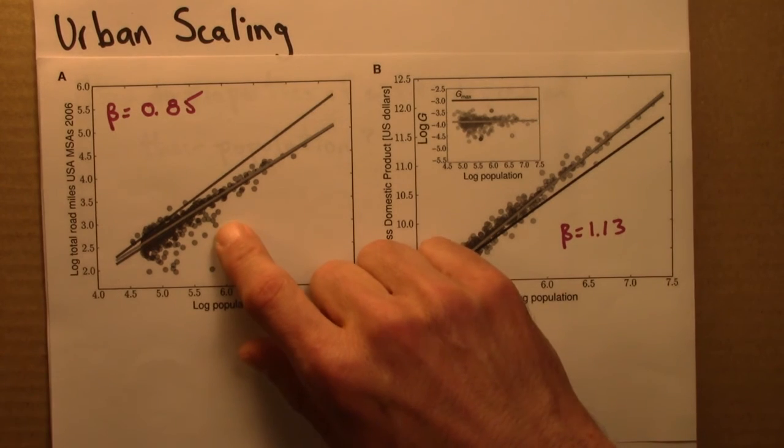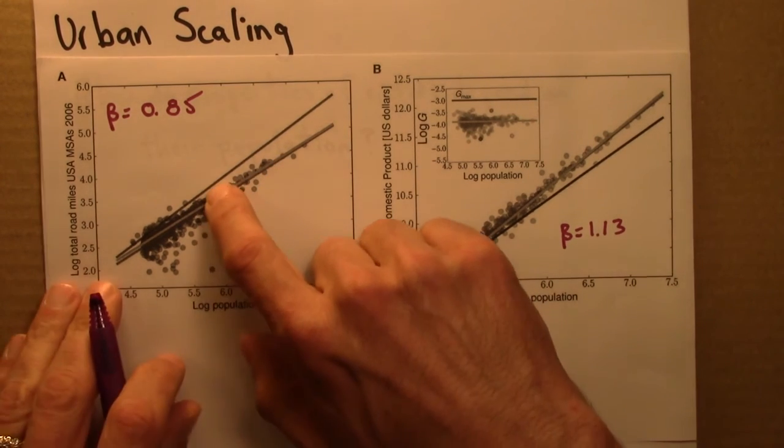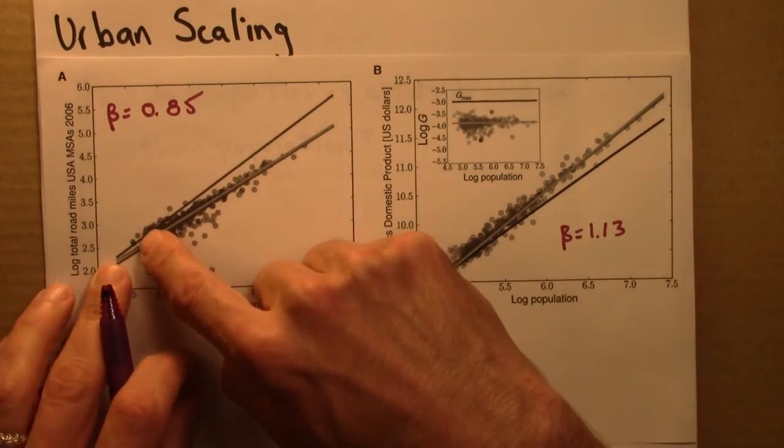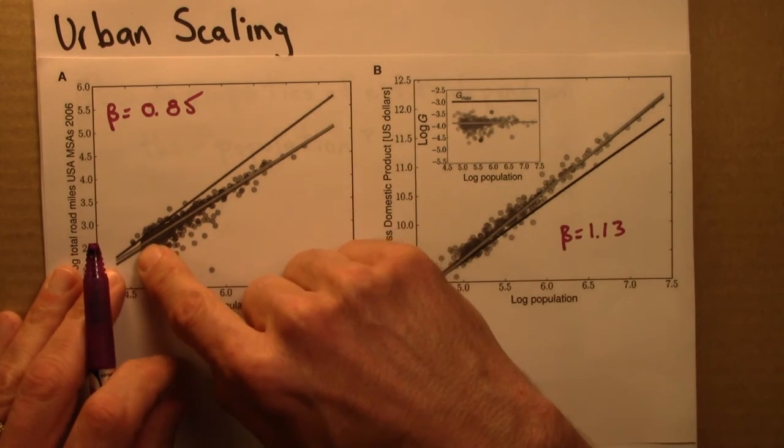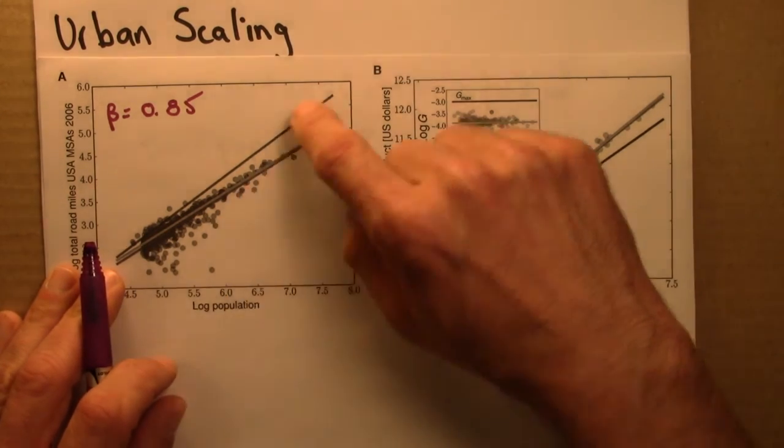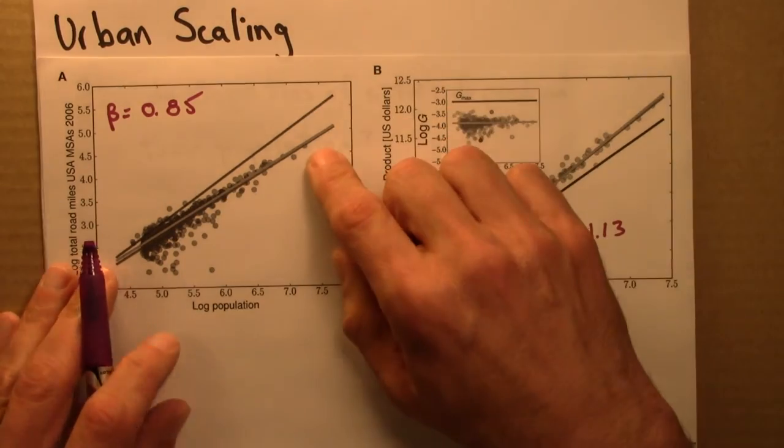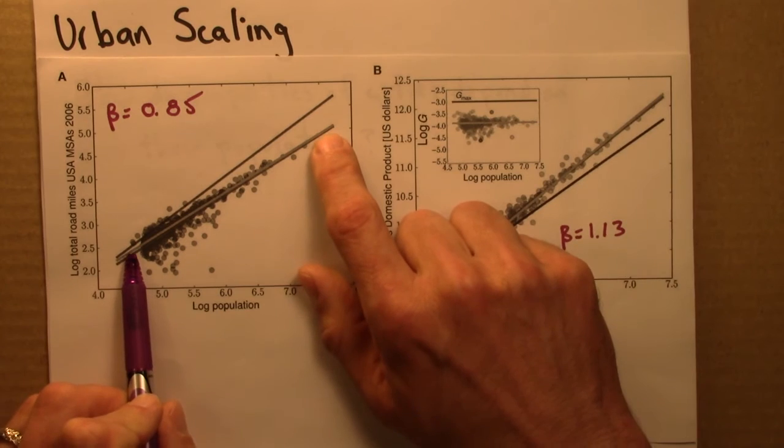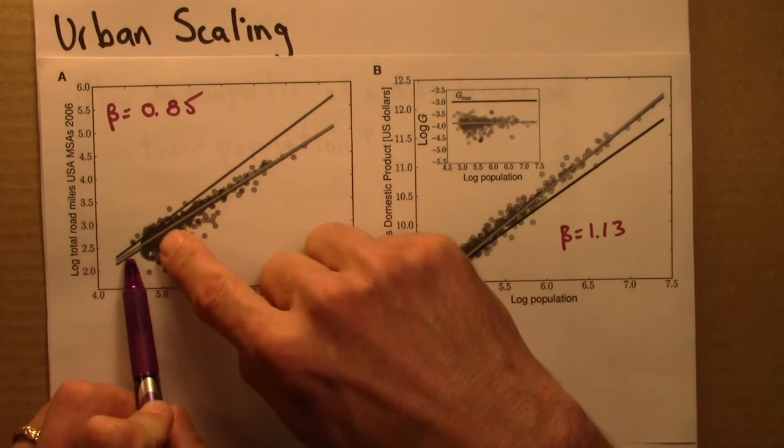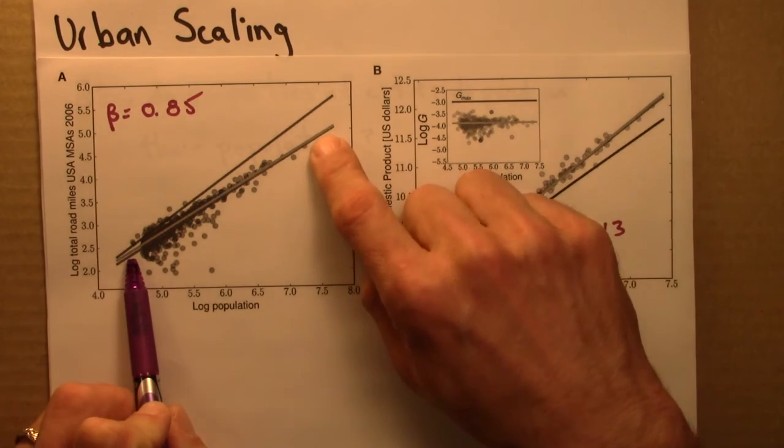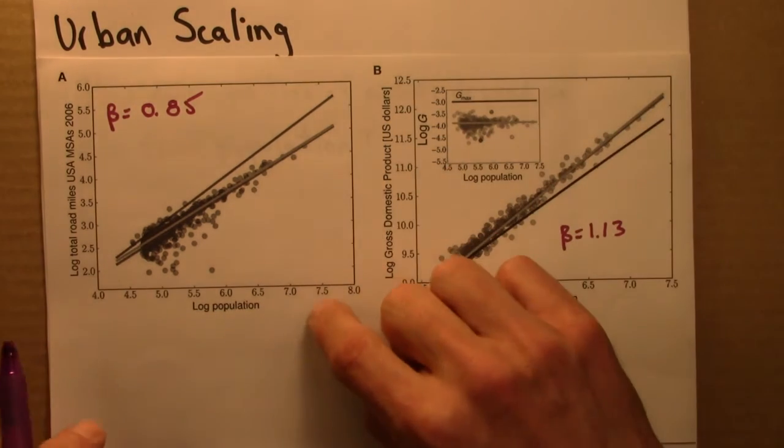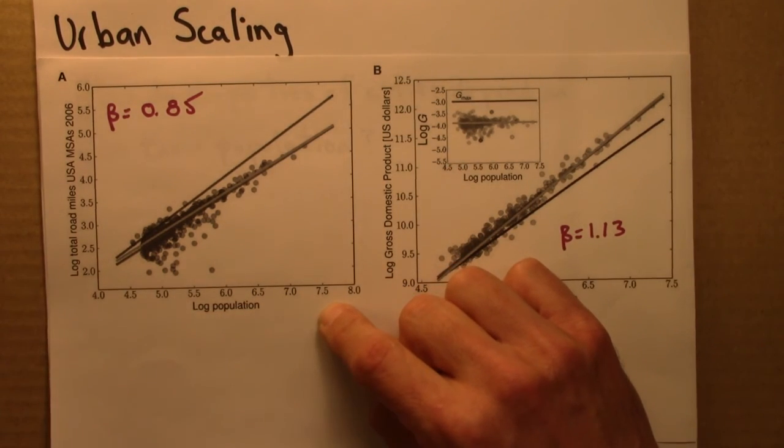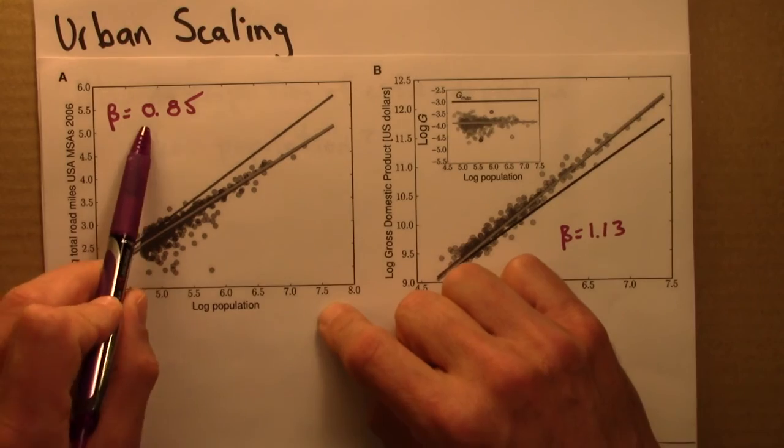So, let me also explain what these lines are. This line here, the sort of darkest line, is a line with a slope of 1. And what this is showing is that the data themselves are clearly, their trend is clearly less than 1. These two here, one of these lines is a fit line with that beta. The other is a line from a theory, so a sort of theoretical fit, that I'll explain in a subsequent video. So, of note again, here we see a quantity, road miles, that's not scaling linearly. But in this case, the exponent is less than 1.